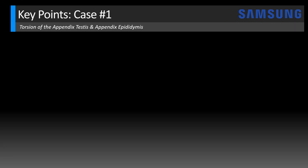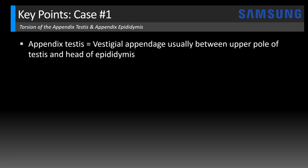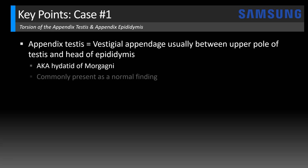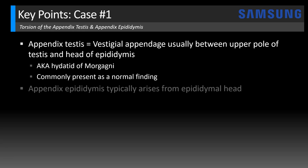Let's review key points for case one. The appendix testis is a vestigial appendage — meaning it has no function, similar to the appendix in the abdomen. It's usually located between the upper pole of the testis and the head of the epididymis, and is also known as the hydatid of Morgagni. Its incidence varies in the literature but it's commonly present as a normal finding, frequently seen incidentally on ultrasound. There's also an appendix epididymis, which typically arises from the epididymal head and can be difficult to differentiate from the appendix testis given the similar location — though that's usually not clinically relevant since presentation and management are similar regardless.